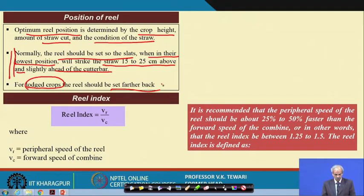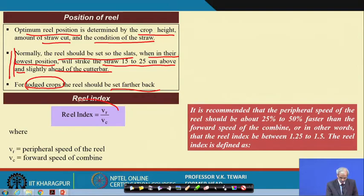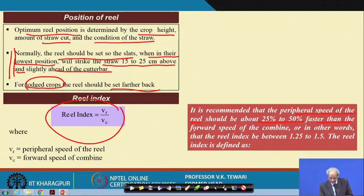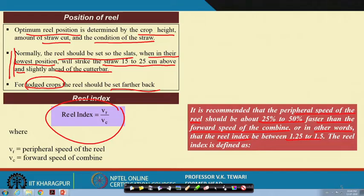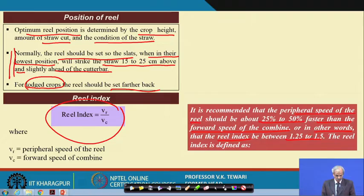The reel index is very important. It is recommended that the peripheral speed of the reel should be about 25 to 50 percent faster than the forward speed of the machine — in other words, the reel index should be 1.5. If the reel speed is not maintained, the crop is not cut in the proper position and is not gathered properly in front of the cutter bar, causing significant losses.